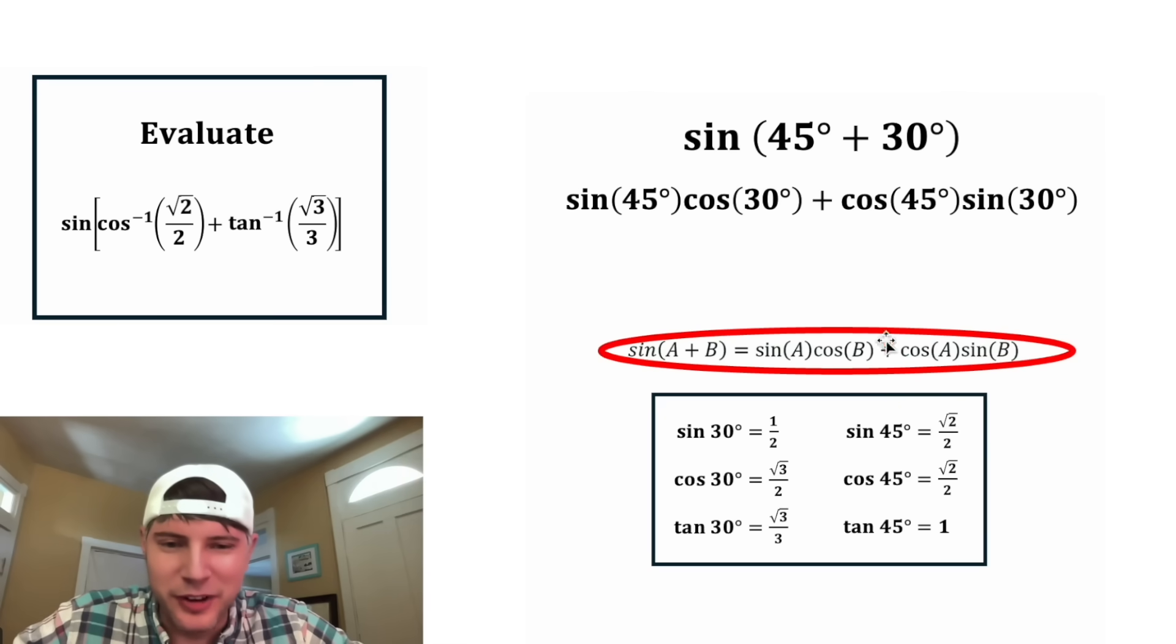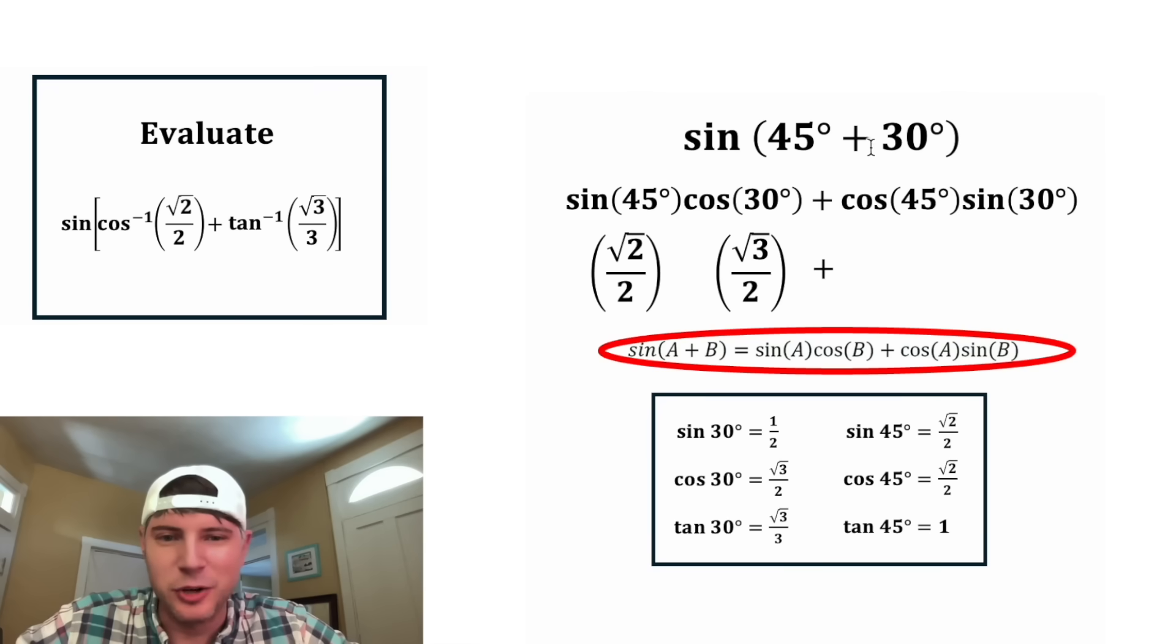The sine of 45, we have that down here, is equal to square root of two over two. Cosine of 30, we have as square root of three over two. And then we're going to add to that the cosine of 45, which is root two over two, times the sine of 30, which is one half.